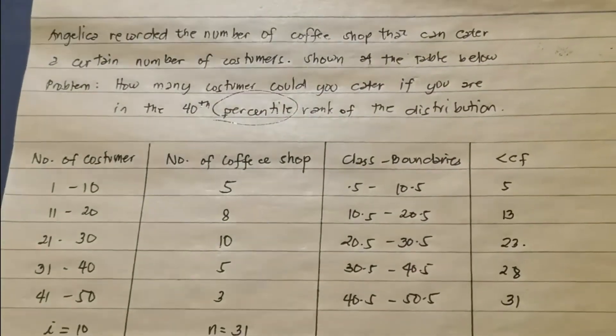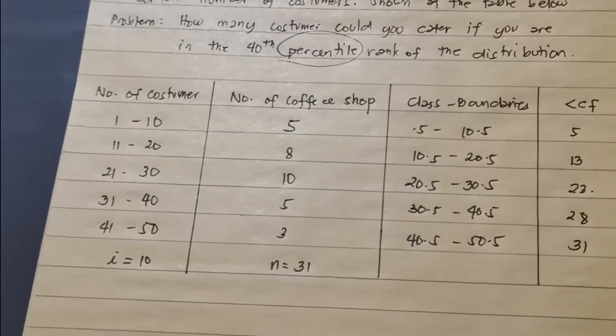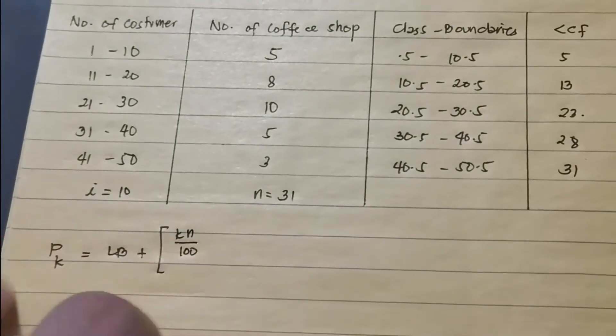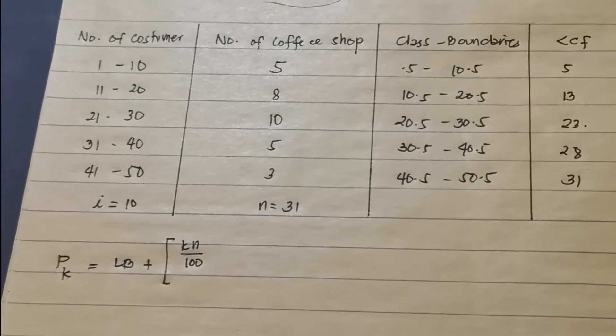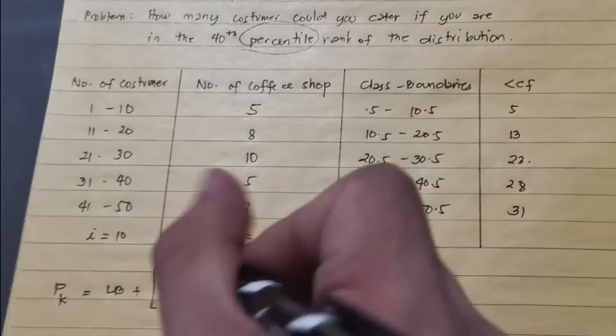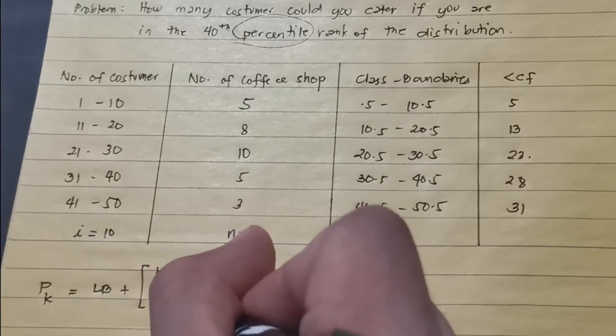Since this problem is about percentile, let me introduce the percentile formula. P sub K equals LB (the lower boundary), plus K times N over 100 — it's divided by 100 because percentile divides the data set into 100 equal parts — minus CFB (cumulative frequency before), all over the frequency of P sub K, times i.